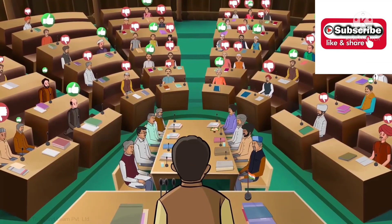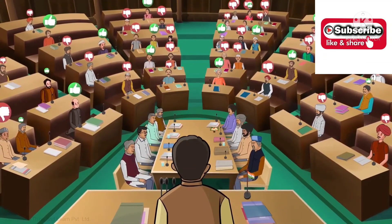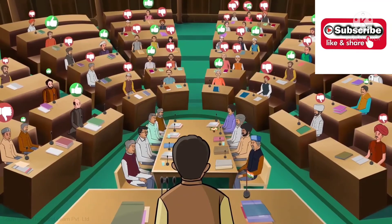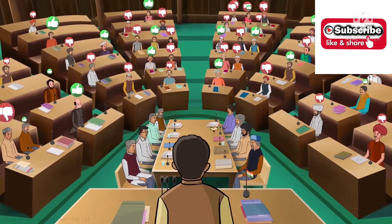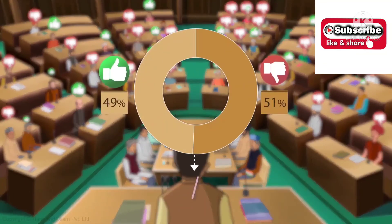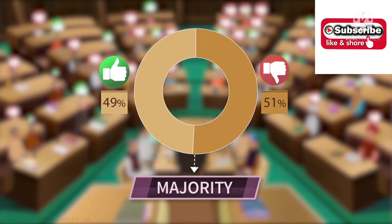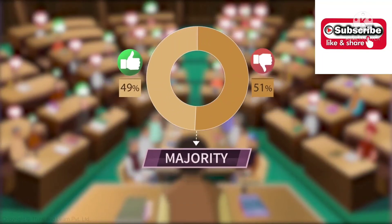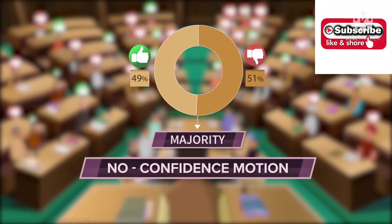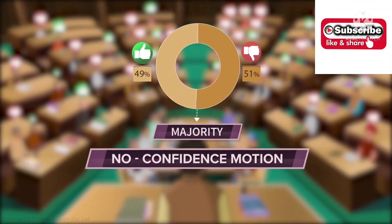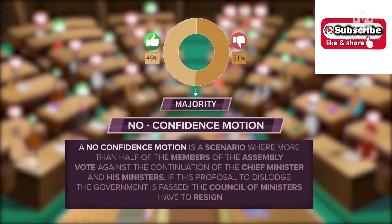The council of ministers is responsible to the assembly. When the majority of the assembly finds the government's policies unsatisfactory, they may pass a no-confidence motion. A no-confidence motion is a scenario where more than half of the members of the assembly vote against the continuation of the Chief Minister and his ministers. If this proposal to dislodge the government is passed, the government must resign.